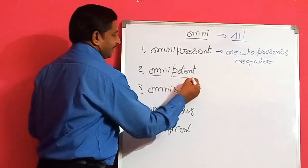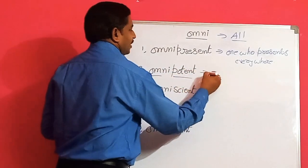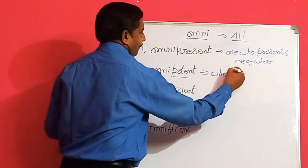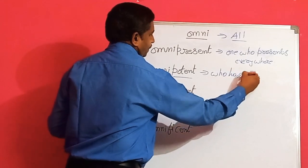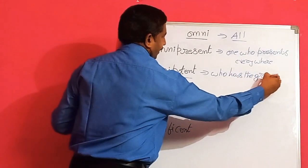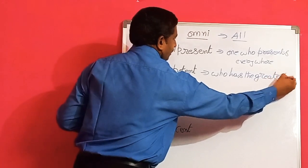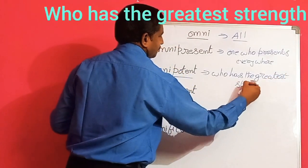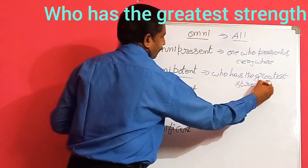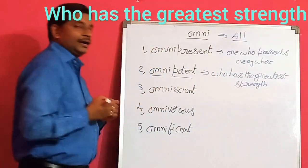Next, omnipotent. Omni means all, potent means energetically. So one who has the greatest energy, the greatest strength is called omnipotent.